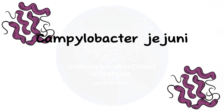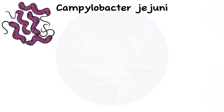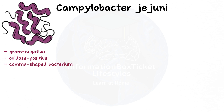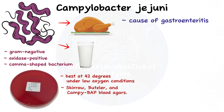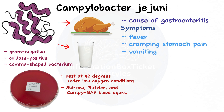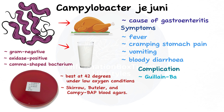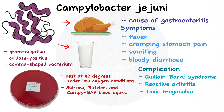In summary, Campylobacter jejuni is a gram-negative, oxidase-positive, comma-shaped bacterium that is primarily found in poultry and unpasteurized milk. It grows best at 42 degrees Celsius under low oxygen conditions on Skirrow, Butzler, and Campybap blood agars. It is the cause of gastroenteritis, which manifests as fever, cramping stomach pain, vomiting, and bloody diarrhea. Guillain-Barré syndrome, reactive arthritis, and toxic megacolon are notable complications.